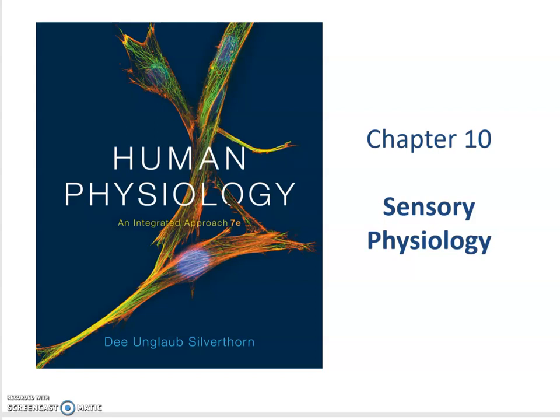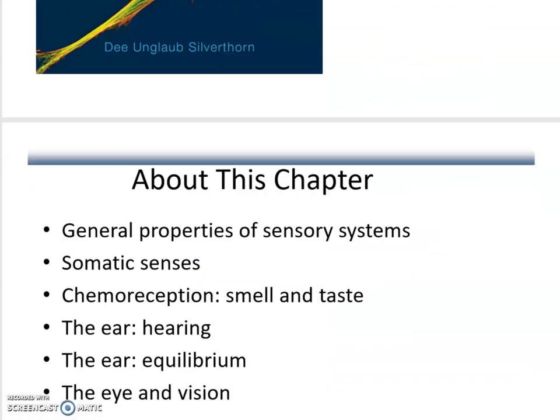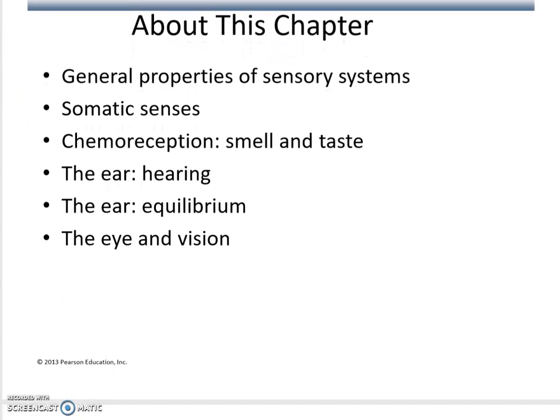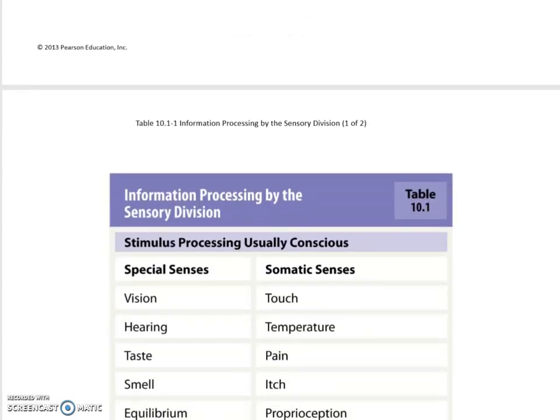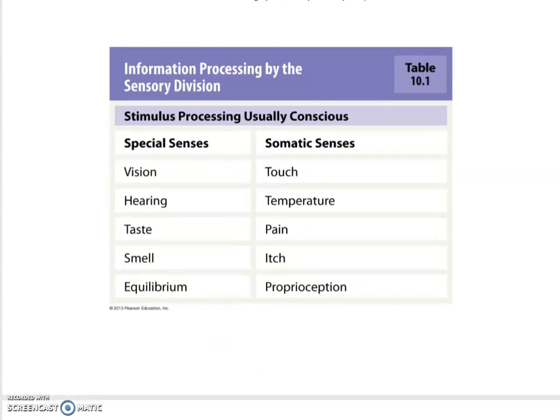Our next topic is sensory physiology. Let's take a look at this chapter. First we're going to take a look at general properties of the sensory system, then somatic senses — those are body-wide senses — followed by the special senses, which include smell, taste, hearing, equilibrium, and vision. We're starting with a table to get an overview; the special senses are listed here.